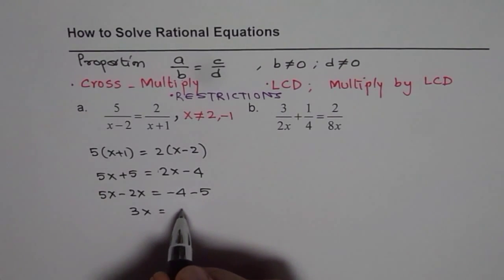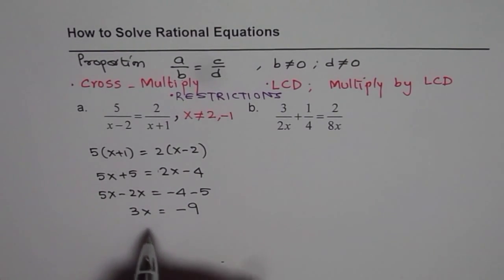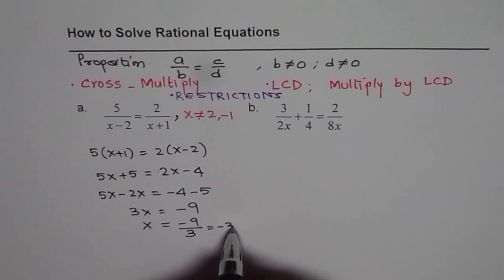5x minus 2x is 3x, and minus 4 minus 5 is minus 9. Now you can divide both sides by 3, so you get minus 9 over 3, which is minus 3.